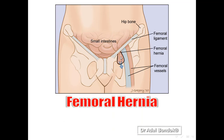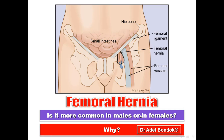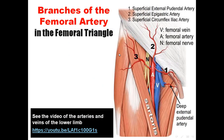The femoral hernia passes through the femoral canal and is medial to the femoral vein. It is more common in females than in males because the female pelvis is wider than the male pelvis, and the femoral canal is wider in females than in males.